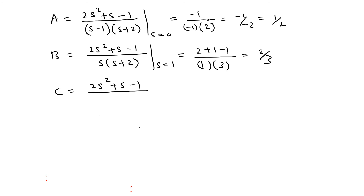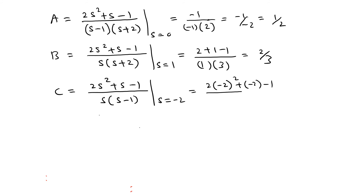To find C: ignore the (s + 2) factor and evaluate (2s² + s - 1) over s(s - 1) at s = -2. You get 2(-2)² + (-2) - 1 over (-2)(-3), which simplifies to 5 over 6.